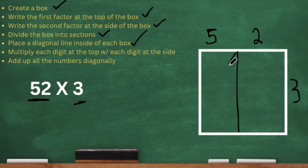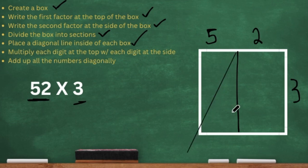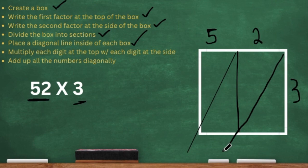Then it says place a diagonal line inside of each box. So I'm going to take it from one point at the top all the way down to the bottom. There we go. And then I'm going to do another diagonal line just like that.